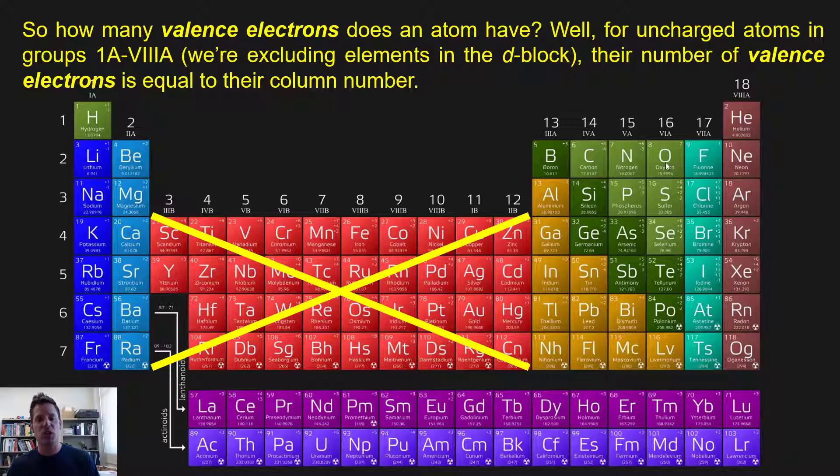For example, oxygen is in column 6A. So the total number of valence electrons it has is 6. Fluorine, chlorine, bromine, and iodine, and all of these others right here are in column 7A. So they have 7 valence electrons. Hydrogen and on down are in column 1A, so they have 1 valence electron. Makes sense? Good.